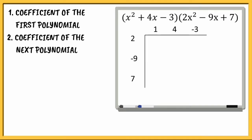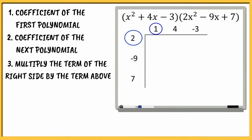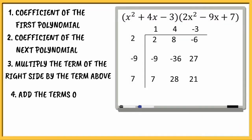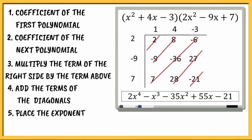The third step is multiply the terms of the right side by the term above. The fourth step is to add the terms of the diagonals. The last step is to place the exponent on your final answer.